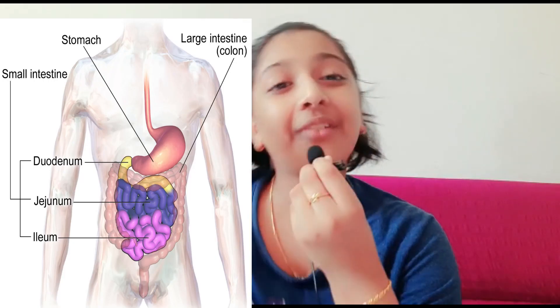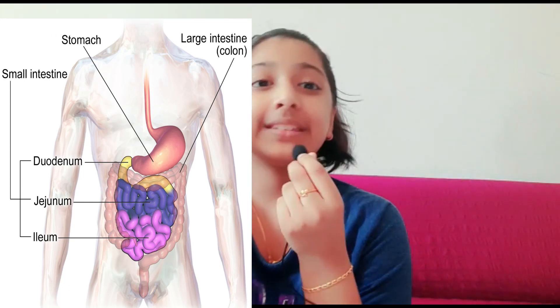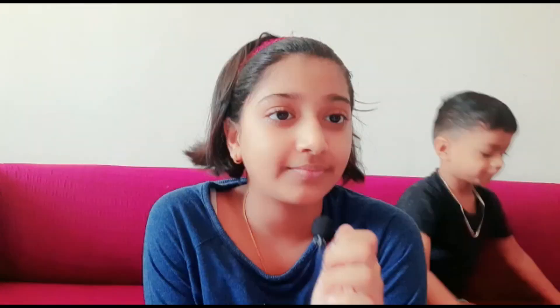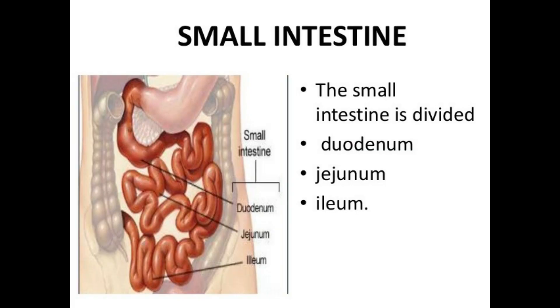Our small intestine contains three parts: the duodenum, the jejunum, and the ileum. The ileum is attached to the large intestine. The small intestine carries out most of the digestive process, absorbing almost all the nutrients from food into the bloodstream. Its walls produce digestive juices and enzymes that work together with enzymes from the liver and pancreas.